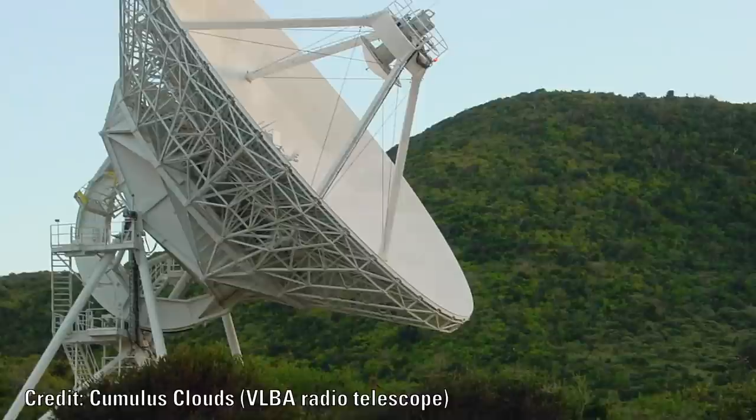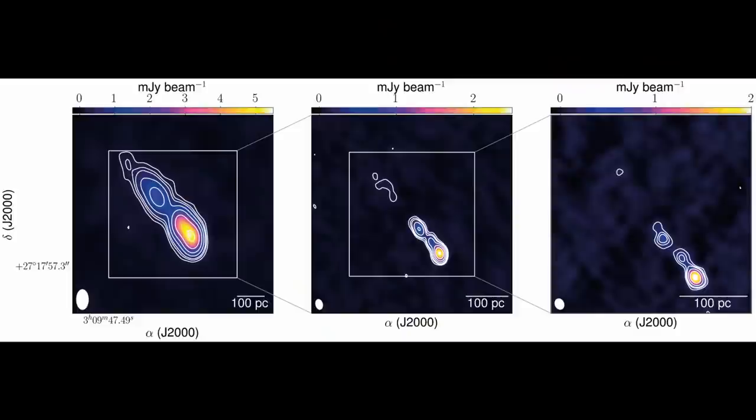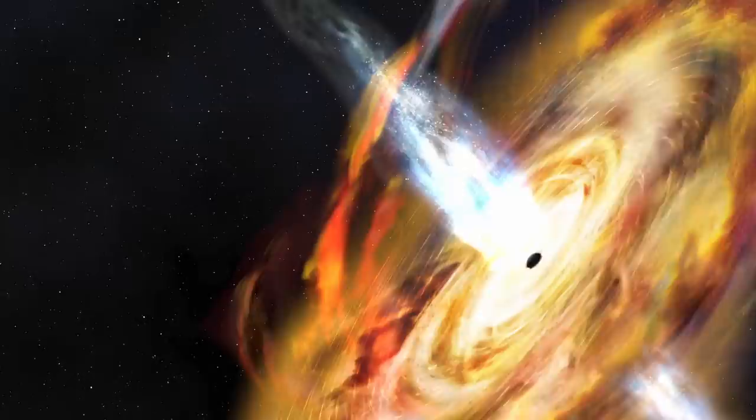They were able to image the jets that were moving away from the blazar using the VLBA, which is a system of 10 radio telescopes. This radio image revealed a broken up jet emitting brightly in radio stretching out about 1600 light years. When they analyzed the data they discovered that the plasma was traveling at 75% the speed of light.